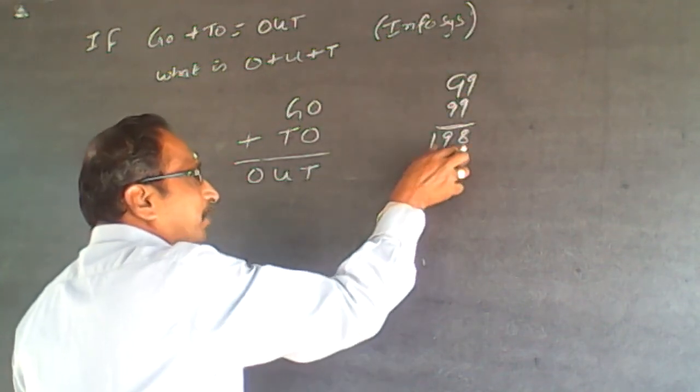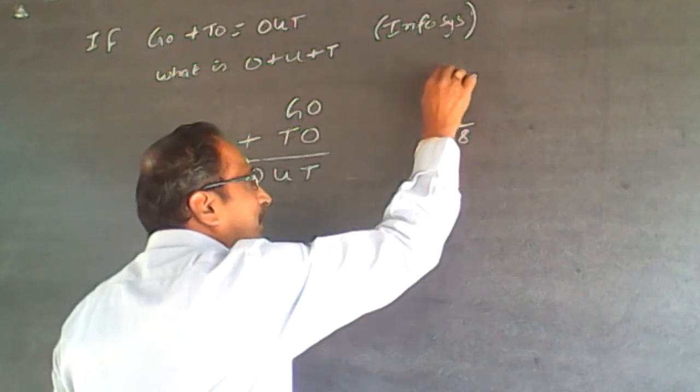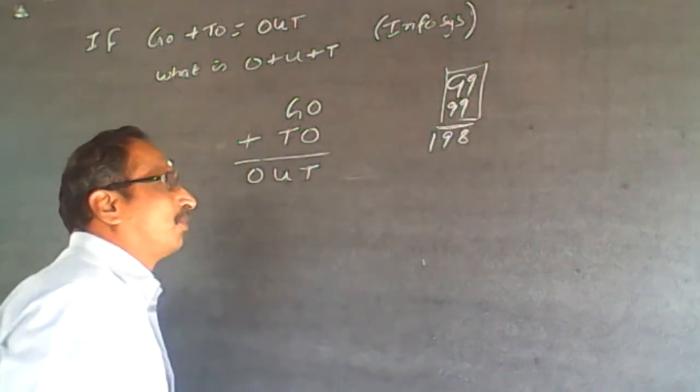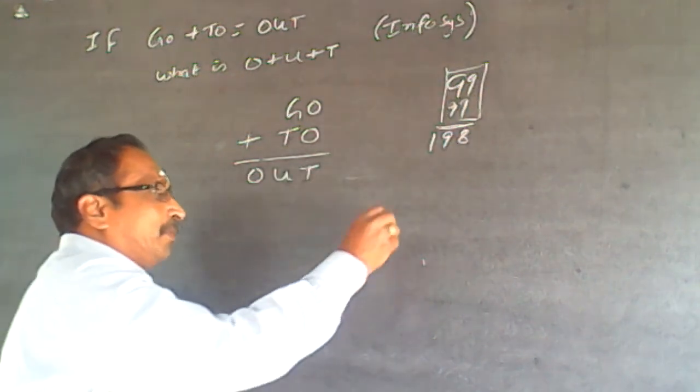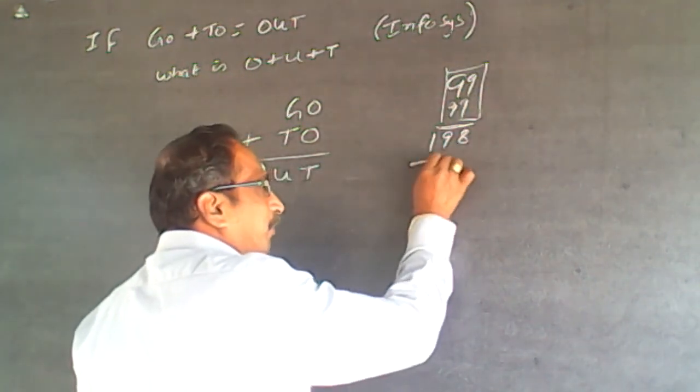So, this becomes a three-digit number. I have taken the maximum two-digit numbers here. For the sake of explanation, the maximum carryover can only be 1.